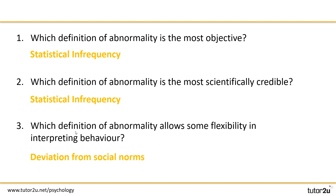Number one — which definition of abnormality is the most objective? The answer is statistical infrequency, because its mathematical approach eliminates subjectivity. Number two — which is the most scientifically credible? Again, statistical infrequency, because it uses standardized tests to measure behavior, such as intelligence tests. Number three — which definition allows the most flexibility? Deviation from social norms, since social norms change over time and our definition of abnormality needs to change with them.